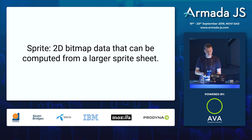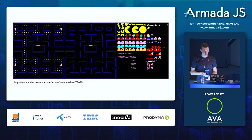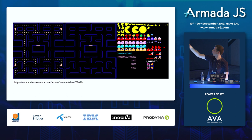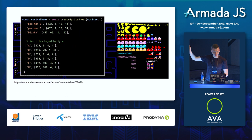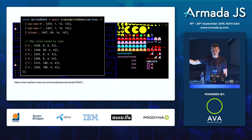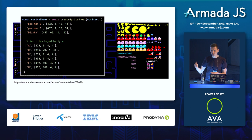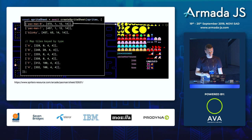A sprite is 2D bitmap image data that can be computed from a larger sprite sheet image. In our game, here's our sprite sheet — it has the map, all the sprites for Pac-Man, the ghosts, the text as well. In JavaScript, I've chosen to represent it with an abstraction where sprites is an HTML image element of the sprite sheet. You pass definitions comprising the sprite name — say Pac-Man, Blinky the red ghost — and then these coordinates in the inner array are the X and Y coordinates on that image, plus the width and height in pixels.